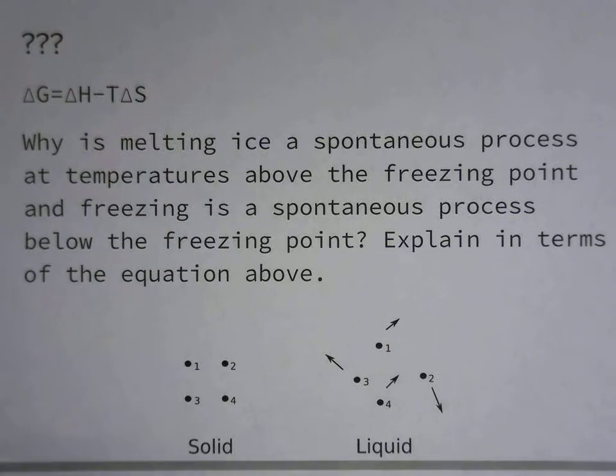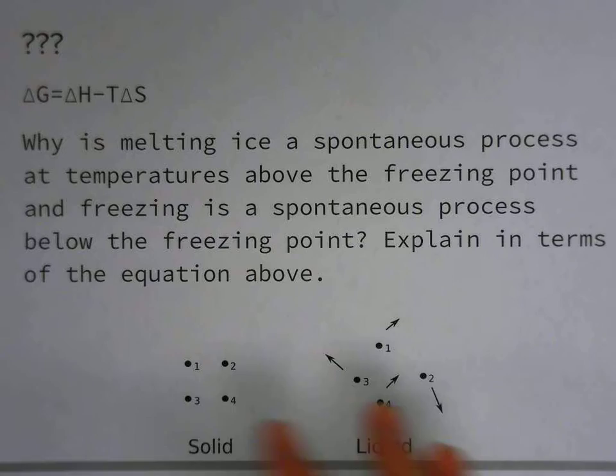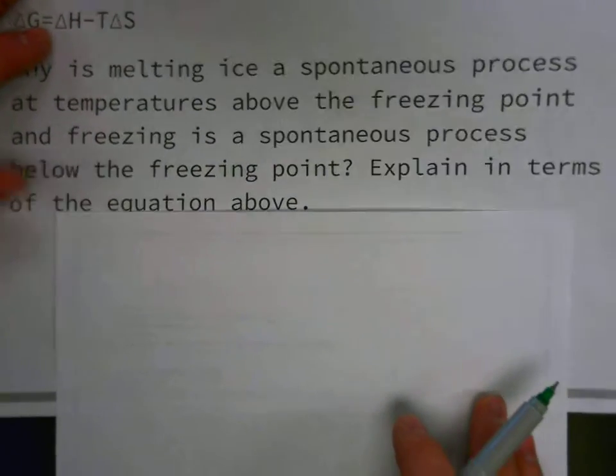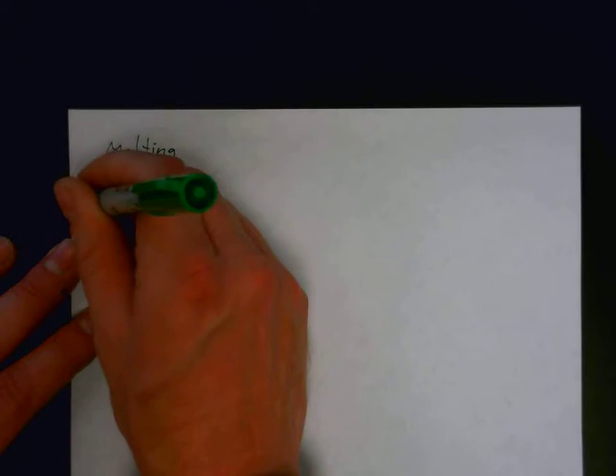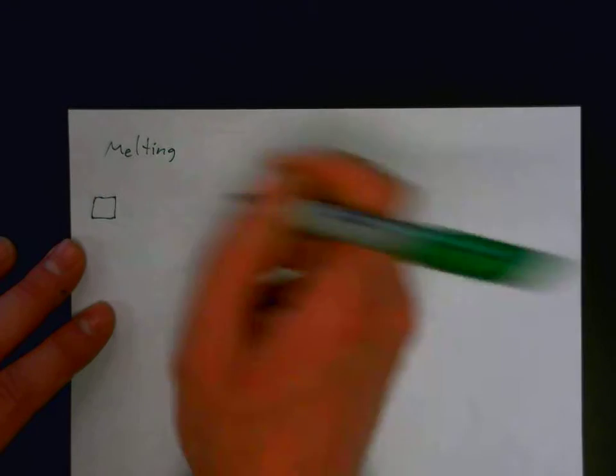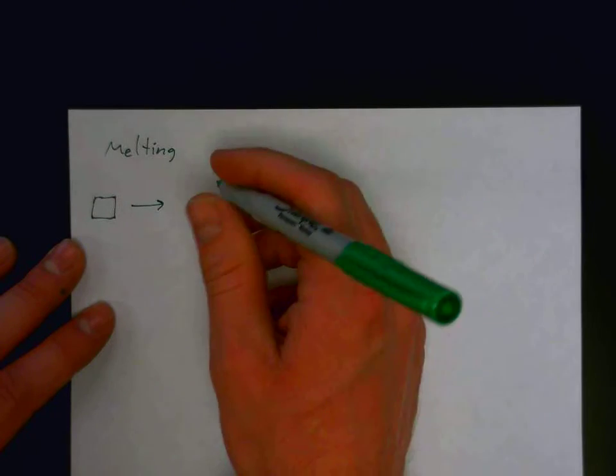So, let's illustrate what happens when we're melting something and freezing. You can see illustrations of the solid and the liquid form. During the process of melting, we have a solid becoming a liquid.